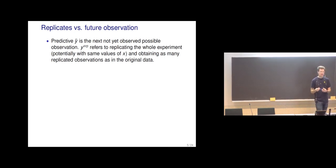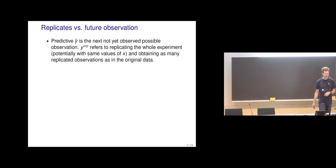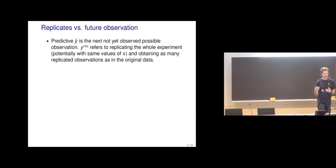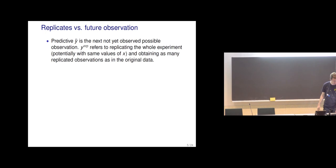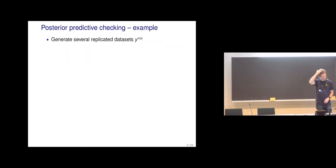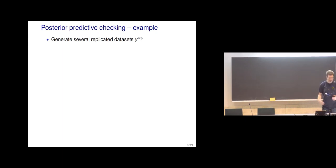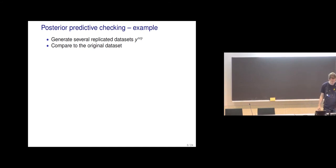A note on notation: y_rep is specifically when we replicate the whole experiment as simulated from the model. We also use y_tilde, which represents just some future, not yet observed possible observation — possibly just one observation. But y_rep specifically means: what if we got a dataset of the same size as the original. We can generate several replicated datasets because generating just one introduces randomness, but generating many lets us account for that randomness and compare to the original dataset.